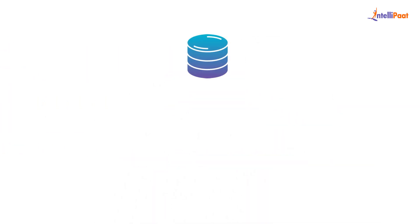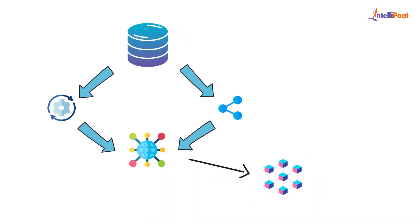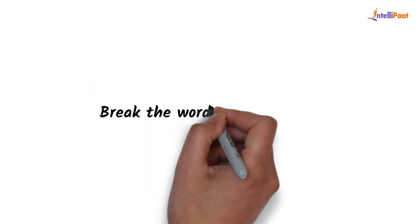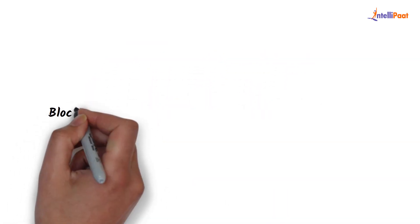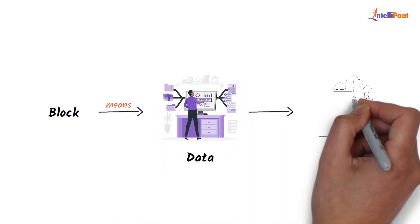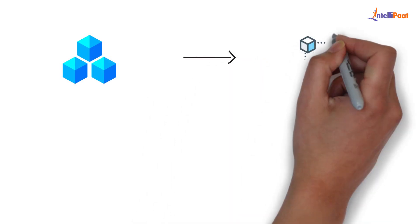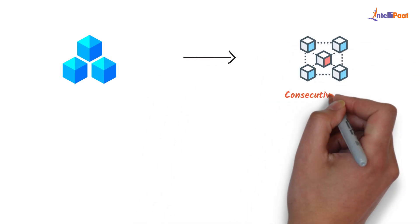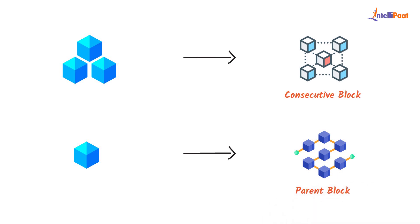When some public database is updated and shared in a widespread network, it is called blockchain. Now let us try to break the word blockchain for a better understanding. Block means data here that is being stored in successive groups, and the fact that each of these blocks are connected to a consecutive block — that is, each child block has a reference to its parent block — hence the term chain.